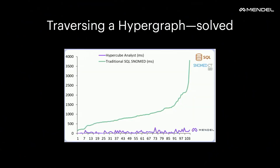After we built that, we found traversing a hypergraph is computationally very challenging and can take a lot of time. So we had to invent a computational way of traversing it. This graph shows our computational engine traversing our hypergraph versus someone running a SQL query on top of a SNOMED-type ontology. Our system is super fast, no matter how complex the query.